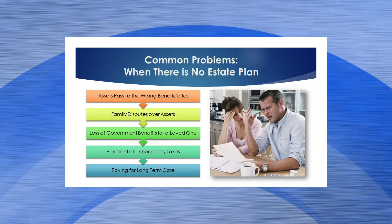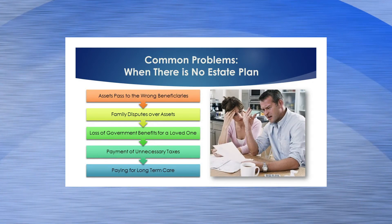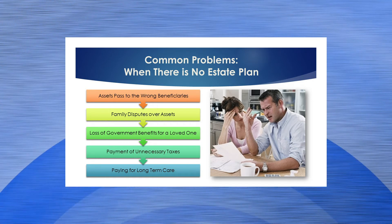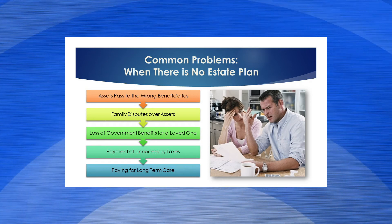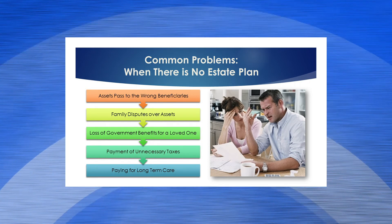When there is no estate plan, you lose control over how decisions are made and how you leave assets. You may lose your assets because you have long-term care needs. Without a plan, you may leave assets to the wrong beneficiaries unintentionally, and families will fight over these assets when you're not clear as to what you want. If you have a loved one who's on government benefits, you have to be really careful how you leave those assets in a protective way. And lastly, payment of unnecessary taxes — no one wants to pay unnecessary taxes.